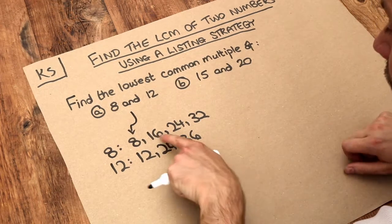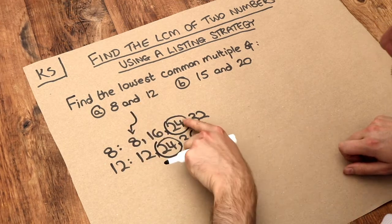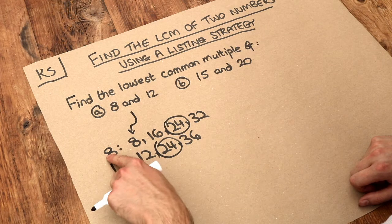Now what number is common to both these lists? Well 24 is common to both. And therefore 24 is a common multiple of 8 and 12.